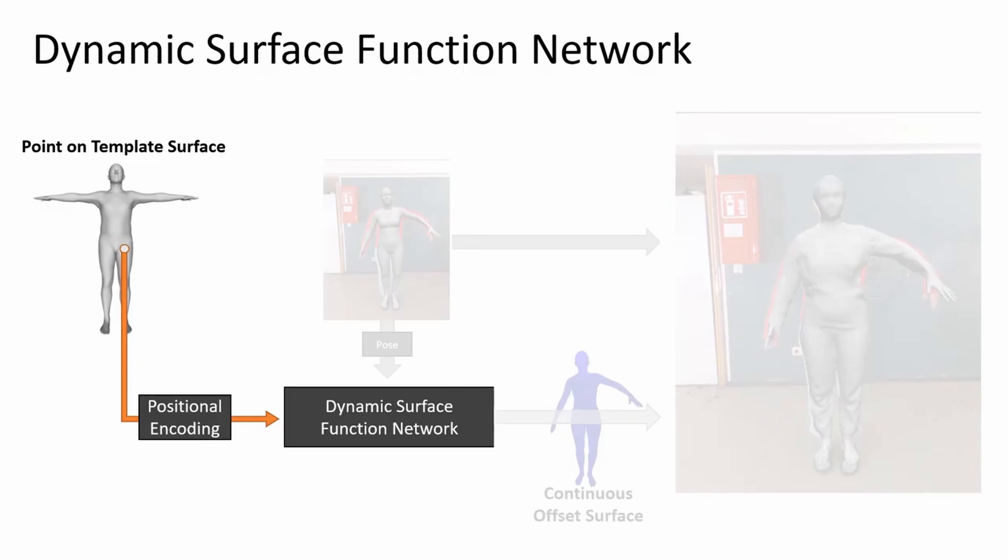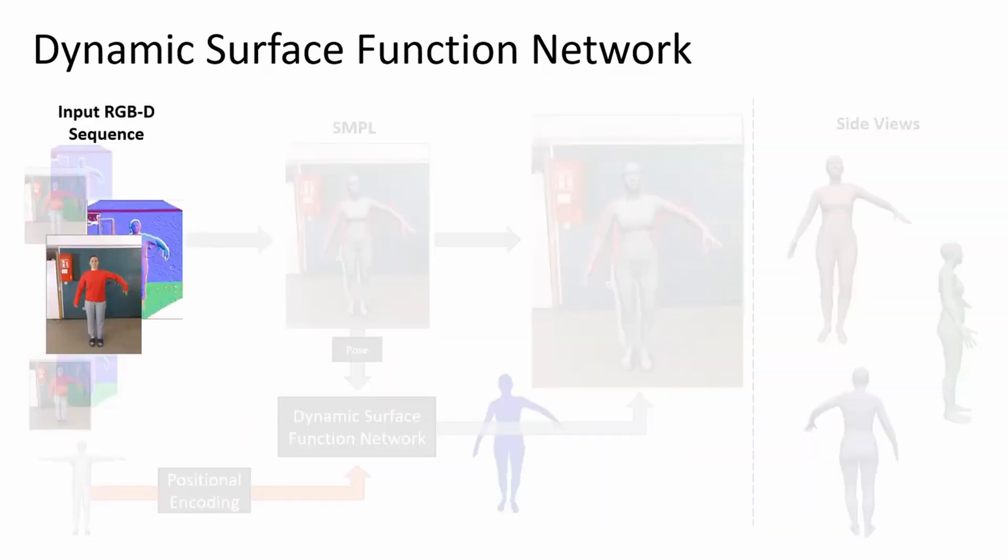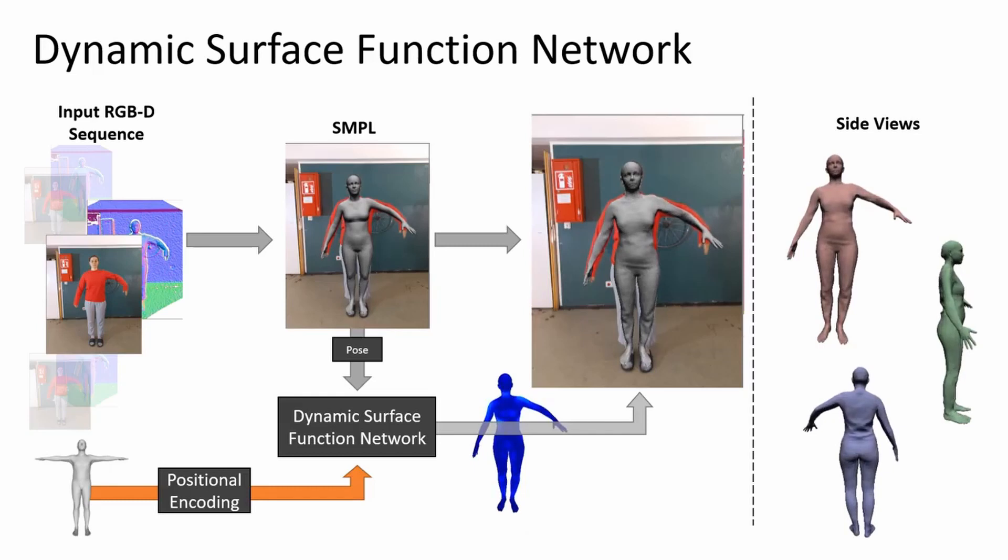Specifically, given an arbitrary point on the template surface, the network predicts the actual surface point. To handle pose-dependent deformations, the network receives additional pose-conditionings as input. In this work, we rely on a monocular RGB-D sequence to optimize the deep neural network to best represent the entire sequence of a human based on dense geometry reconstruction terms.